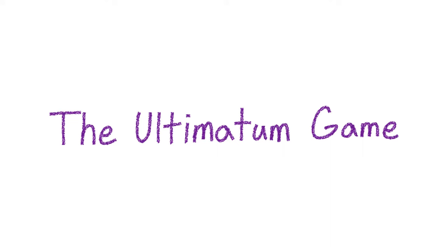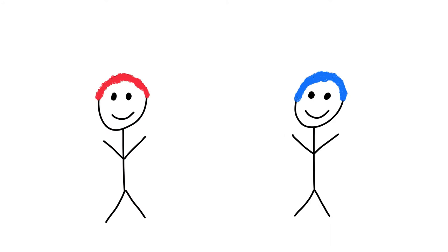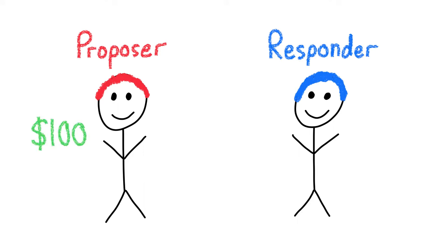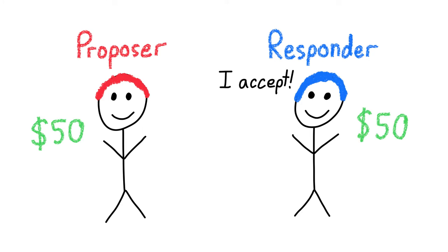So what is the ultimatum game? The ultimatum game is a game consisting of two players, a proposer and a responder. The proposer is given something and told to split however much of this thing they want to the responder, who has nothing. In this case, let's say it's $100. If the responder accepts the proposer's offer, then both the proposer and responder keep the money they have at the end of the game.